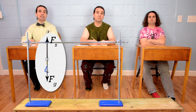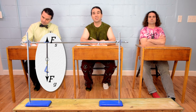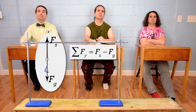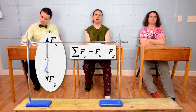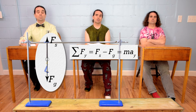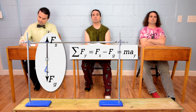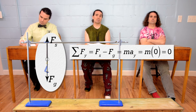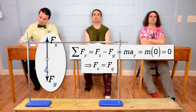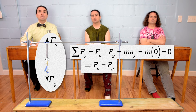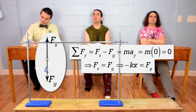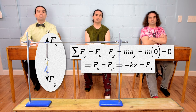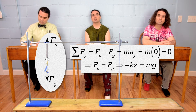Now we can use Newton's second law in the y direction. The net force in the y direction equals the spring force, which is positive because it's up, minus the force of gravity, minus because the force of gravity is down. The net force in the y direction also equals mass times acceleration in the y direction. The hanging mass is now at rest, so the acceleration in the y direction equals zero. We can add the force of gravity to both sides, so the spring force equals the force of gravity. And we can now substitute in equations. The force of the spring equals negative k times x, and the force of gravity equals mass times acceleration due to gravity.